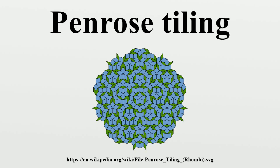Many of the common features of Penrose tilings follow from a hierarchical pentagonal structure given by substitution rules. This is often referred to as inflation and deflation, or composition and decomposition, of tilings or tiles. The substitution rules decompose each tile into smaller tiles of the same shape as those used in the tiling. This shows that the Penrose tiling has a scaling self-similarity, and so can be thought of as a fractal. Penrose originally discovered the P1 tiling in this way, by decomposing a pentagon into six smaller pentagons and five half-diamonds.